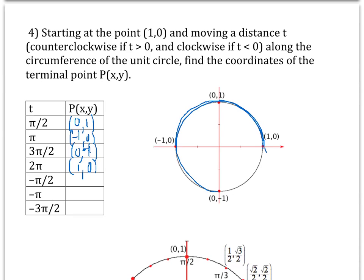Going in the negative direction means going clockwise, still starting at (1, 0). Going −π/2 puts you at (0, −1). Going −π puts you at (−1, 0). Going −3π/2 brings you back up to (0, 1).